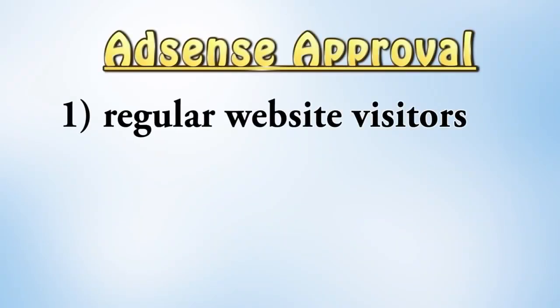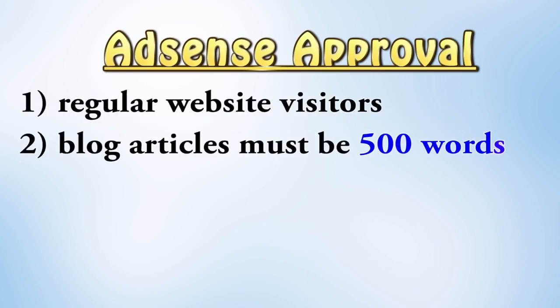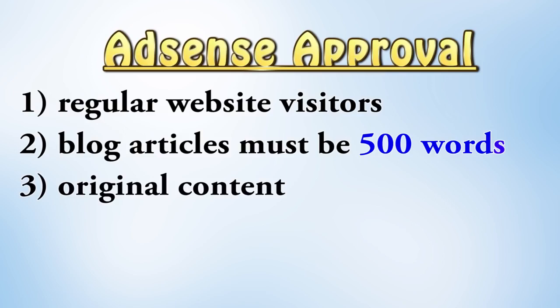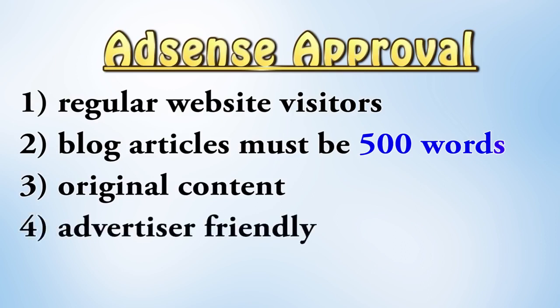So it's the next day — I've just checked my AdSense and I can now access it. Now there are some things you need to be aware of. I recommend only submitting your blog to Google AdSense for monetization once you have around 20 to 30 people visiting your site on a daily basis. Your blog articles need to be at least 500 words in length. All of your content needs to be original — if you've copied content, you're most likely going to get this rejected. And finally, your content needs to be advertising friendly.